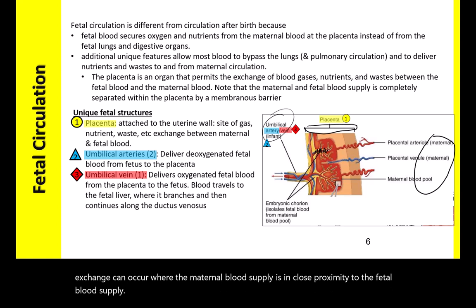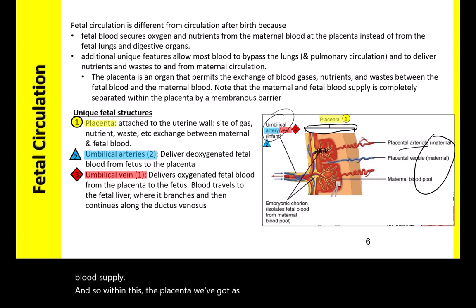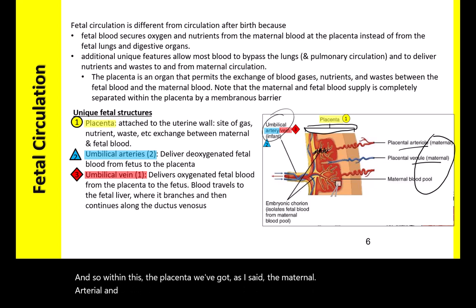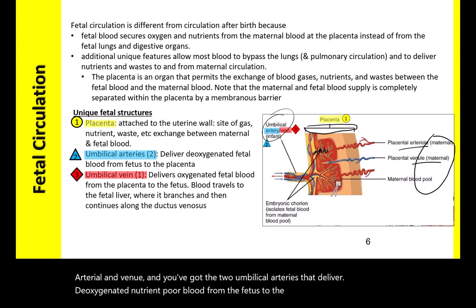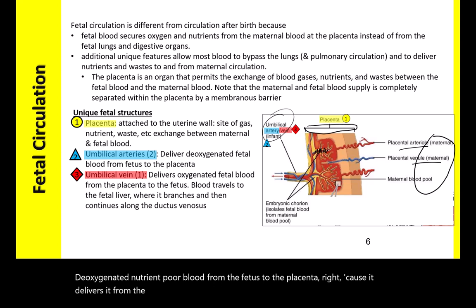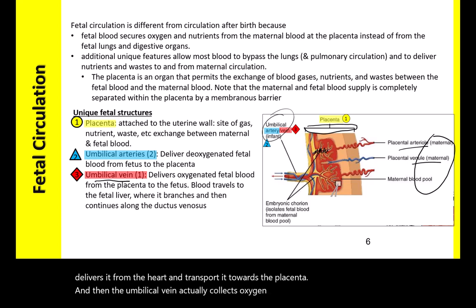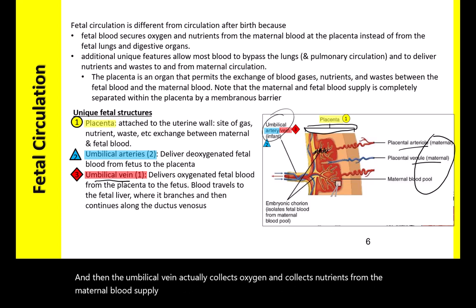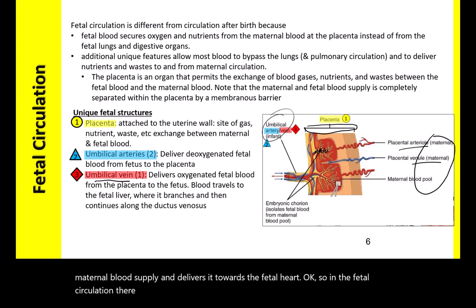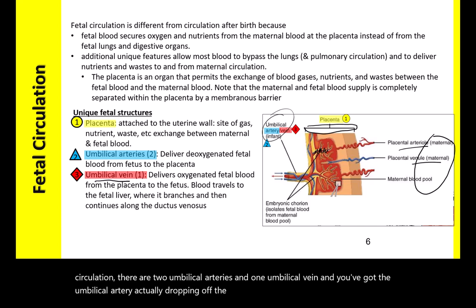Within the placenta, there are two umbilical arteries that deliver deoxygenated, nutrient-poor blood from the fetus to the placenta. The umbilical vein collects oxygen and nutrients from the maternal blood supply and delivers it toward the fetal heart. So in the fetal circulation, there are two umbilical arteries and one umbilical vein — the arteries drop off deoxygenated blood and the vein picks up oxygenated, nutrient-rich blood.